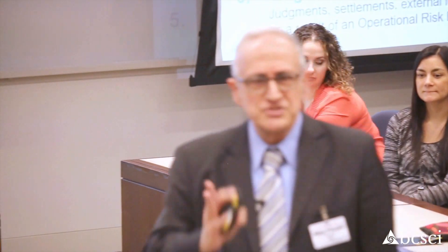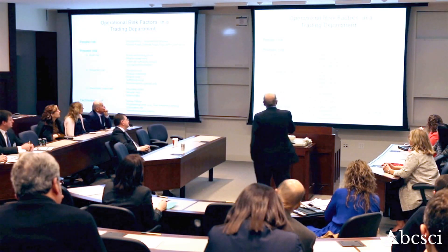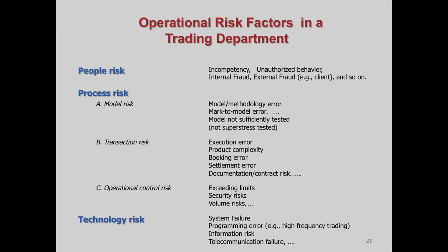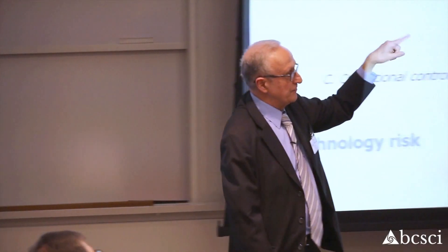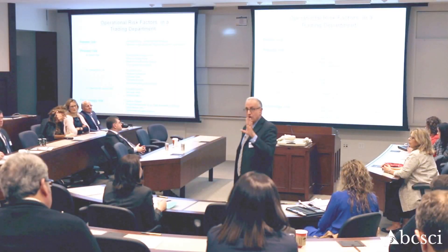The $250 million penalty to the Agricultural Bank of China was not actually a big deal — it was just a warning to shape up. Operational risk factors include people risk: employees can be incompetent or engage in unauthorized behavior. There is internal fraud, external fraud — it can even be a client. For example, that money laundering case was a people risk that came from a client who apparently was not checked sufficiently well, according to the regulators.